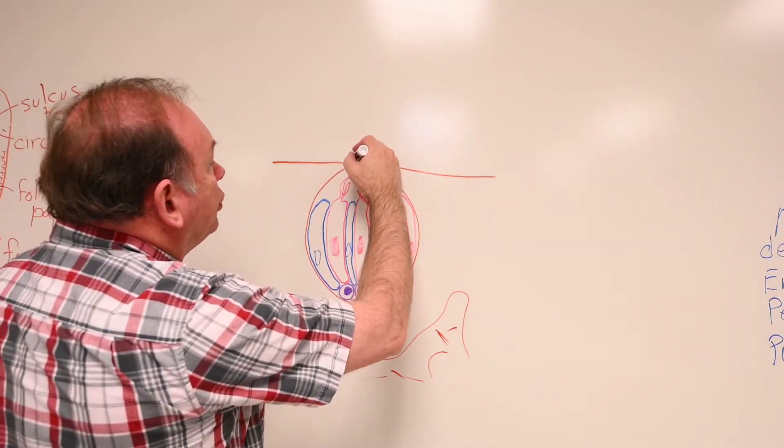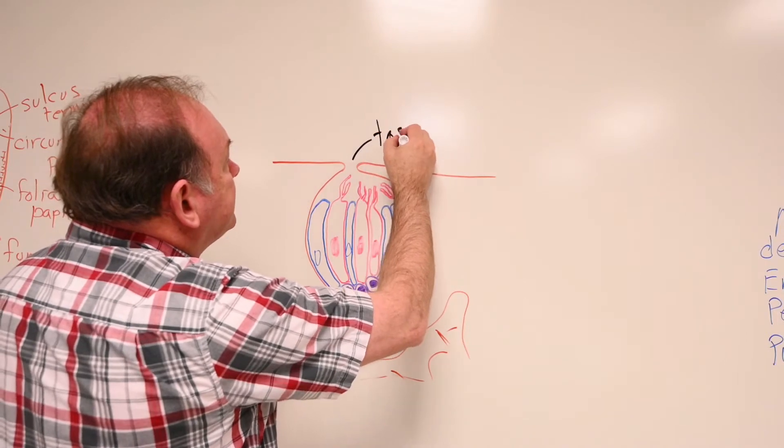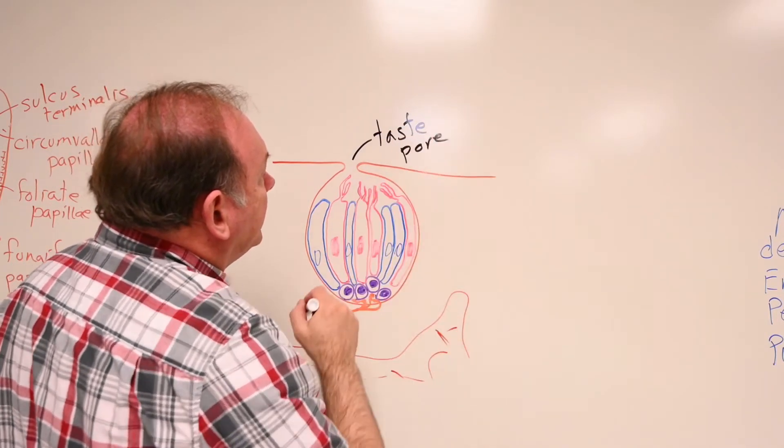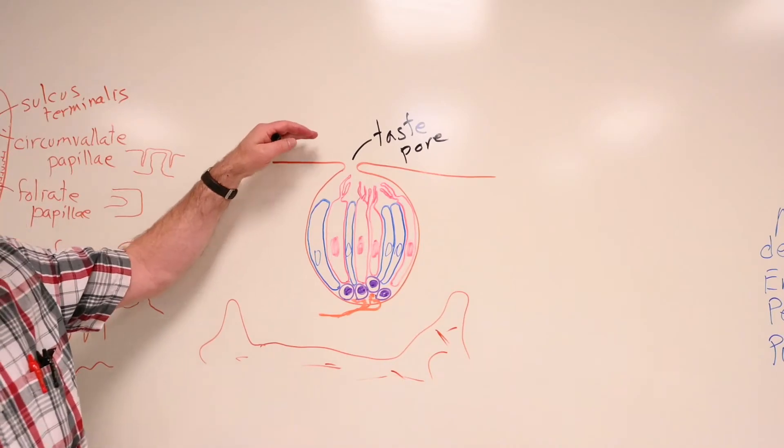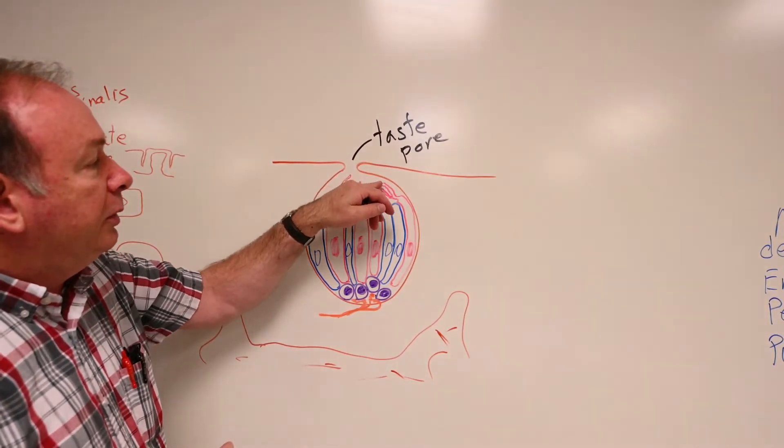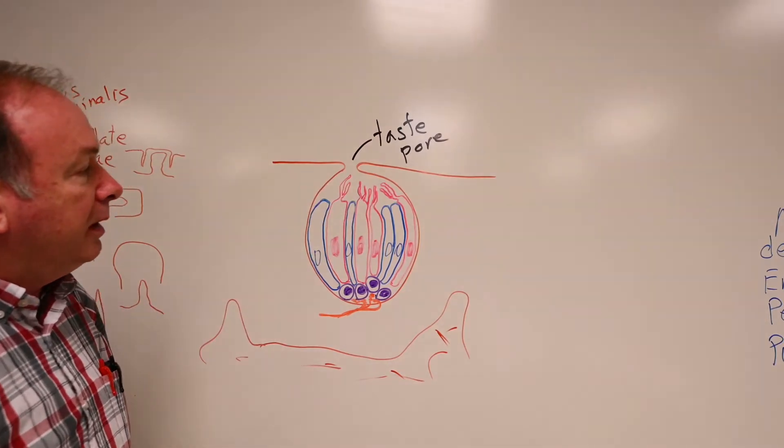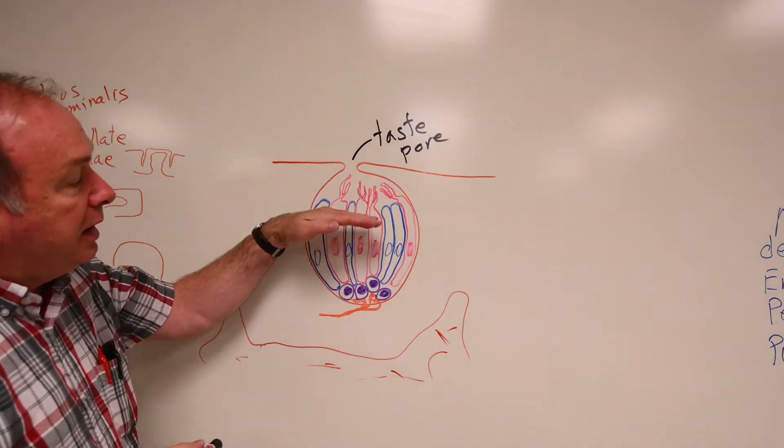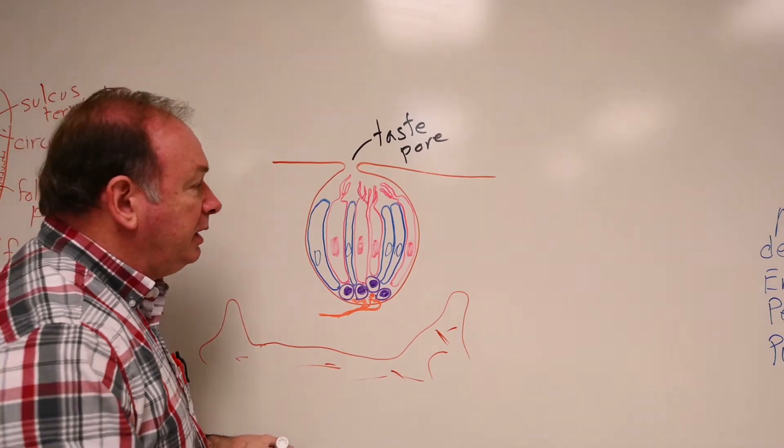And in the surface of that, you'll find the opening to what we call a taste pore. So fluids on the surface of the tongue can mix with fluid here near the opening of that taste pore to interact with these cells of the taste bud here.